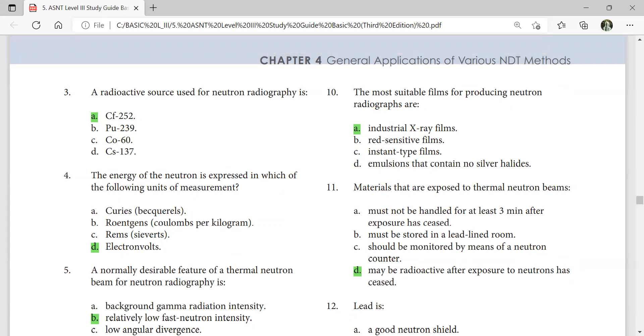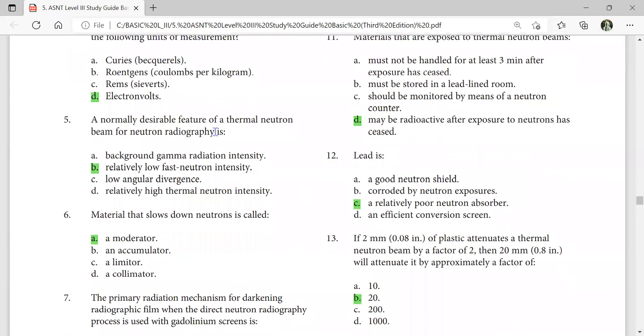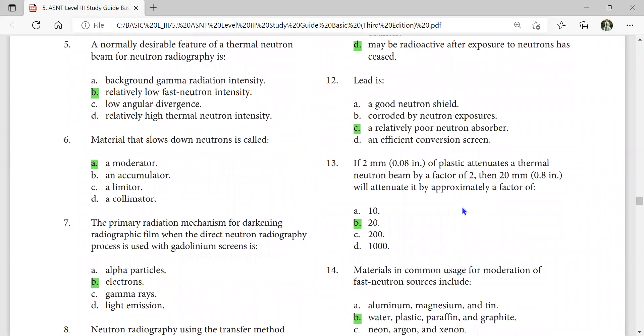Normally desirable features of a thermal neutron beam for neutron radiography is relatively low fast neutron intensity. Lead is a relatively poor neutron absorber. Material that slows down neutrons is called a moderator. Water, deuterium, tritium, and graphite are the moderators.